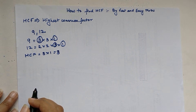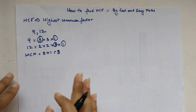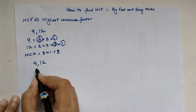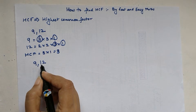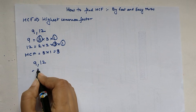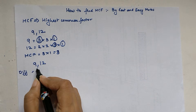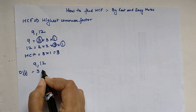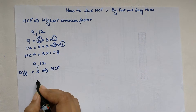So let me show you a trick with which you will be able to find the HCF of any numbers in a matter of seconds. Taking 9 and 12 again — the first thing you do is find the difference: 12 minus 9 equals 3. The next step is to check whether 3 is a factor of both 9 and 12. If it is, then 3 is my HCF.